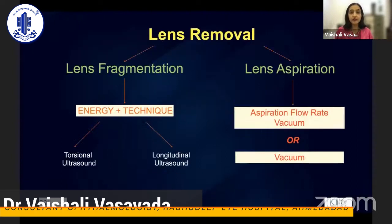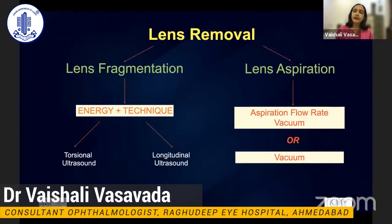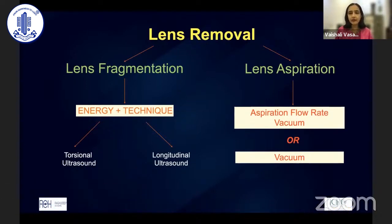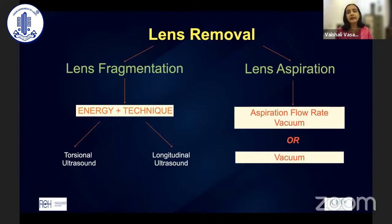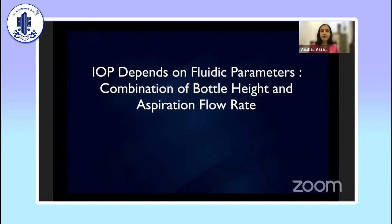When we talk of cataract surgery or phacoemulsification — whether it's FLAX or manual phaco — we are dealing with energy in the form of ultrasonic or femtosecond laser, and how we remove the lens and cortical matter. Whether you use a Venturi or peristaltic system, it is the flow of fluid that matters. For peristaltic machines, we use a combination of vacuum, aspiration flow rate, and bottle height, and whatever goes in via irrigation pressure must be balanced with whatever comes out.